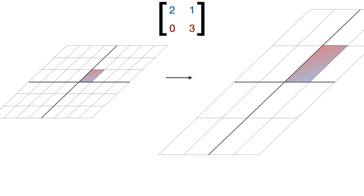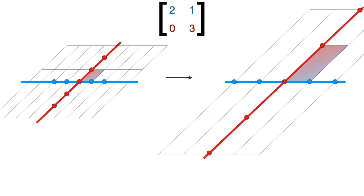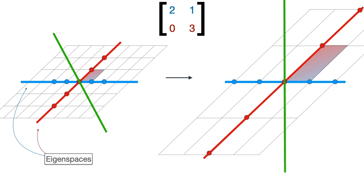Everything here has a name and the stem is the word eigen, which is German for 'own.' The two vectors forming the basis are called eigenvectors. The basis is called an eigenbasis and the two quantities by which we stretch the eigenvectors are called eigenvalues. Every point in the line formed by the blue eigenvector gets sent to another point in this line — the line gets stretched by two but it gets sent to itself. The same happens with the line formed by the other eigenvector: it gets stretched by three but gets sent to itself. These two lines are called eigenspaces, and they are the only two lines through the origin that get sent to themselves.